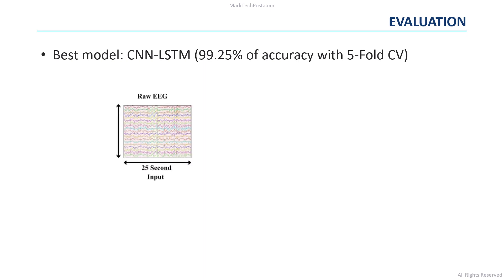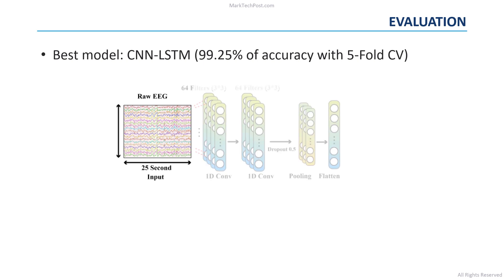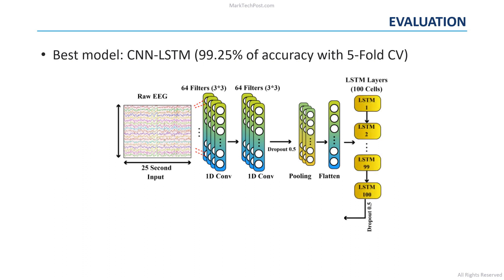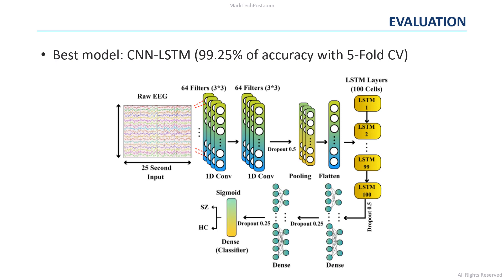Each EEG signal was divided into segmentation windows of 25 seconds without any overlapping. Input data are given to a couple of convolutional layers, then after the dropout, pooling, and flattening layers, data flow into an LSTM layer that includes 100 recurrent cells. Finally, the researchers added three dense layers, with the last layer employing the sigmoid activation function for the final classification.